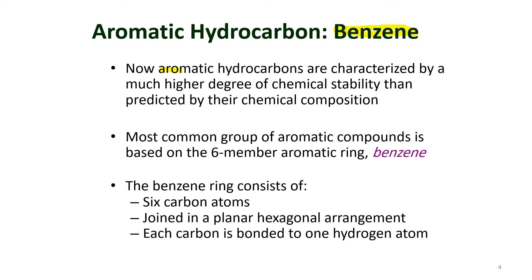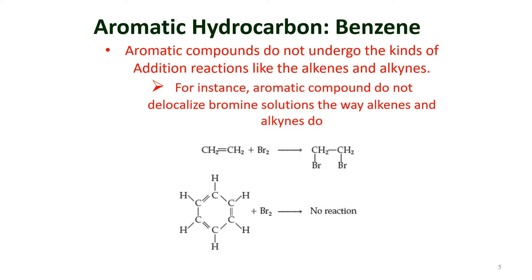One important thing to remember about aromatic hydrocarbons is that they have a much higher degree of chemical stability than is predicted by their chemical composition — they are much more stable than their structure suggests. The most common group is based on the benzene molecule: six carbons and six hydrogens in a cyclic hexagonal planar arrangement, with each carbon bonded to one hydrogen and alternating double bonds in the ring.